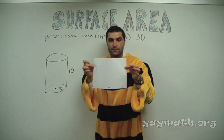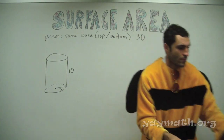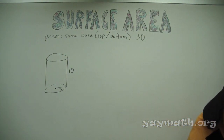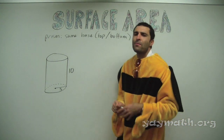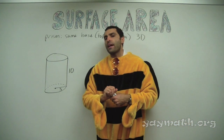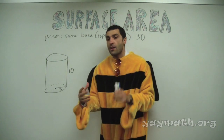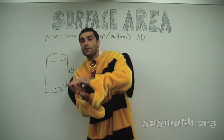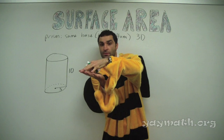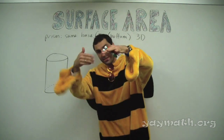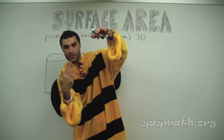So basically, rectangles are like the focal point for most shapes. A lot of prisms have rectangular faces, because when you open them up, you create this lengthy side — rectangle, rectangle, rectangle.